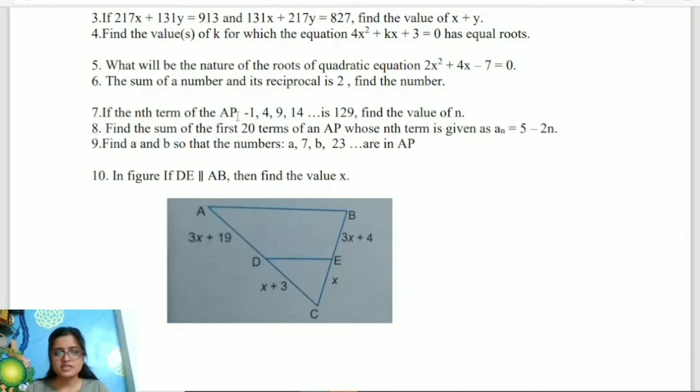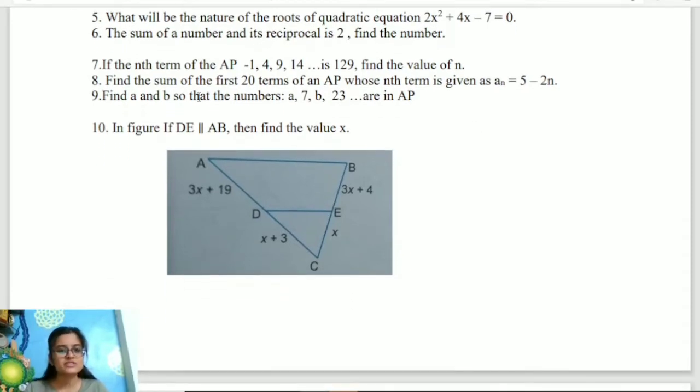Question 7: If the nth term of an AP minus 1, 4, 9, 14 is 129, find the value of n. Basic AP question. Just apply the nth term formula and solve it. Question number 8: Find the sum of the first 20 terms of the AP whose nth term is given as an equals 5 minus 2n. You have the nth term, you have to find the first 20 terms. Put a1, a2 to get the terms. This is also NCERT question. Ninth question: Find a and b so that the numbers a, 7, b, 23 are in AP. This is easy. Already told it's in AP, so find a and b values. Question number 10: You have to find the value of x. You have this triangle and you have to find x value. It's an easy question.